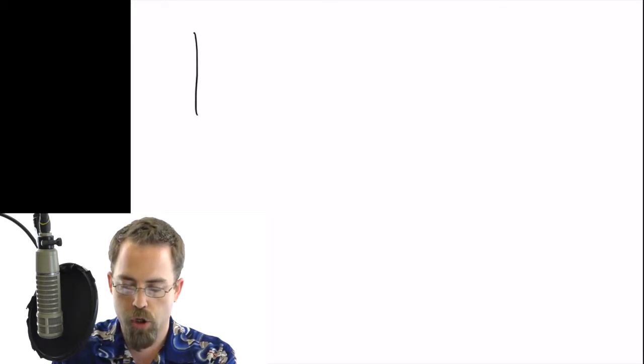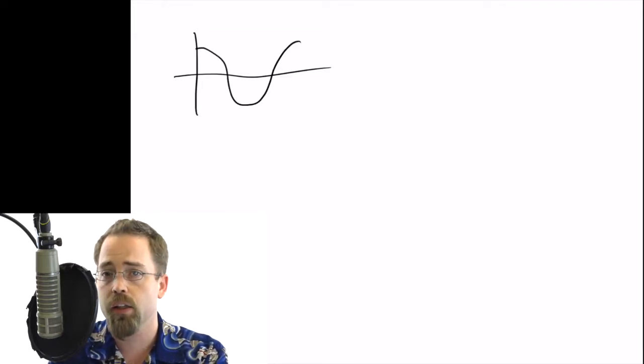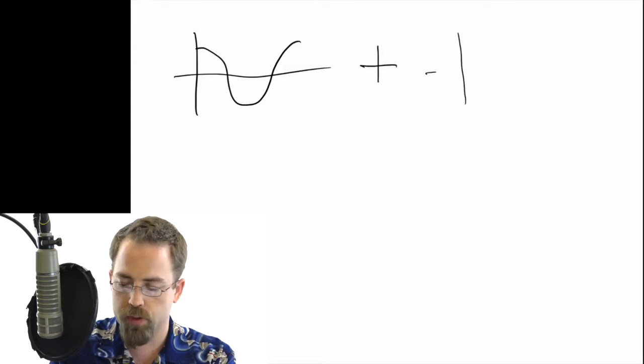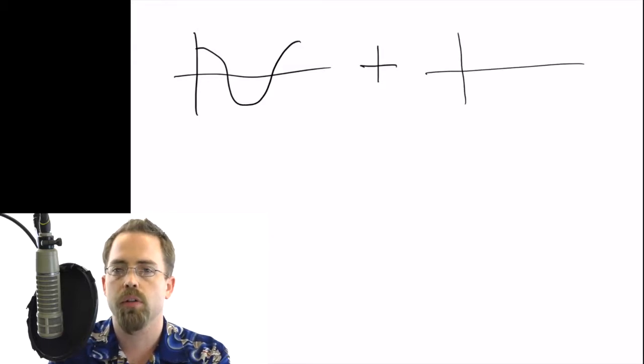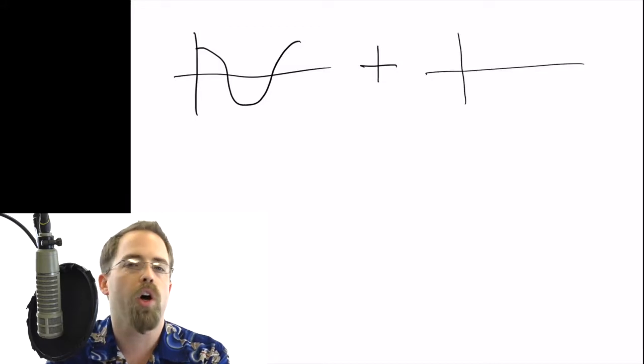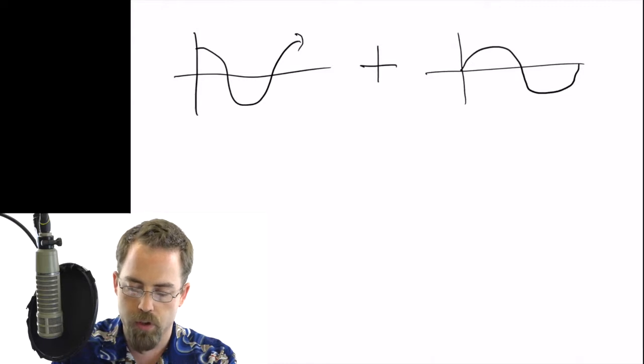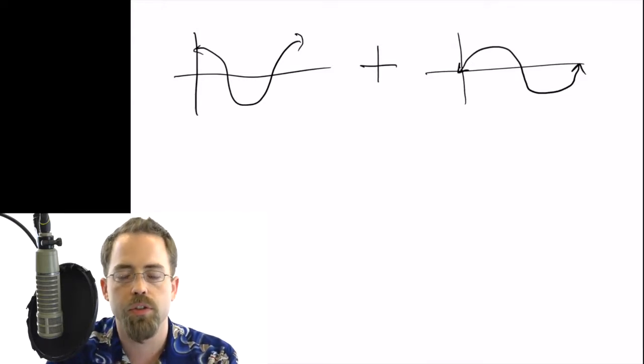The first thing that we're going to learn is how to combine cosine waves. Remember, cosine starts high, and then we're going to be able to add that to a sine wave. Sine starts in the middle and goes on like that. Now, of course, these all go on for forever. These are trig functions that just never stop.